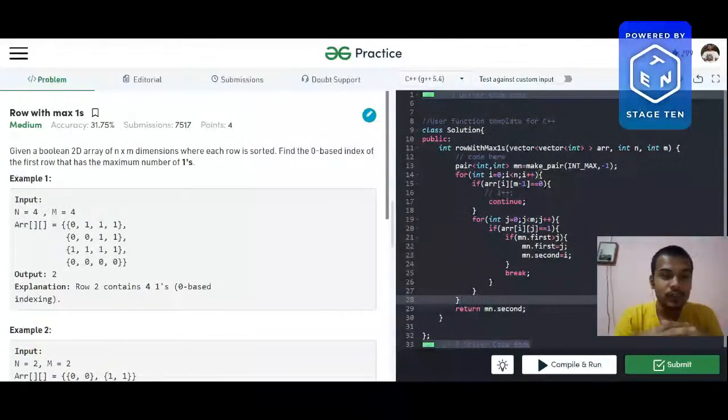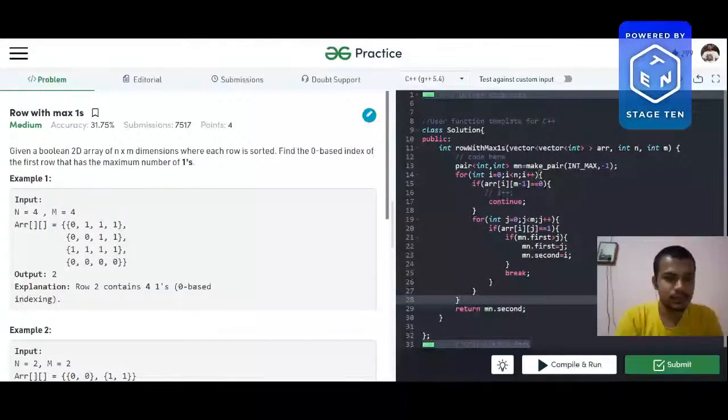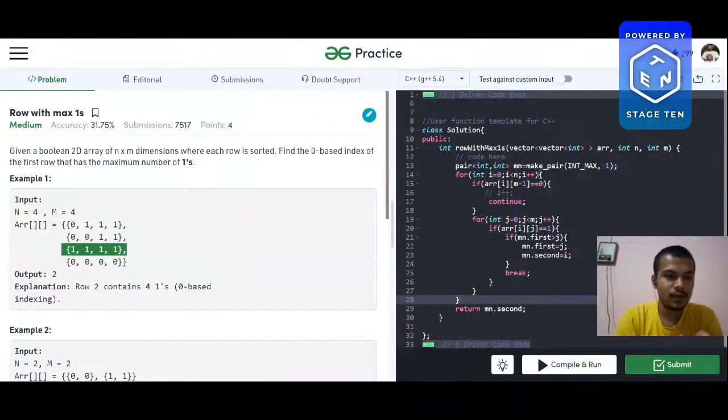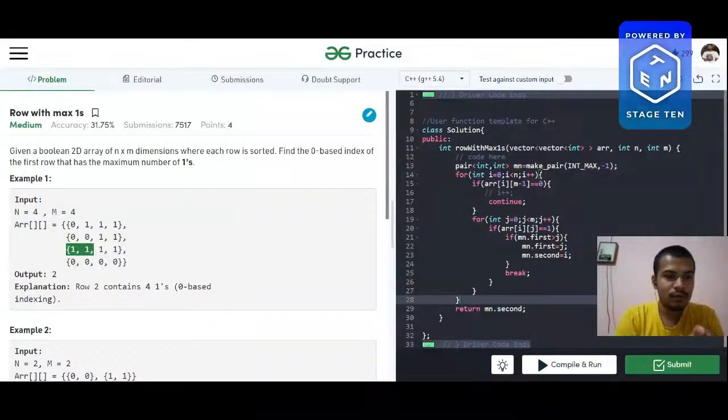the row with maximum ones in a given matrix. So there is this matrix given to us and what we have to do is find the row which has the maximum number of ones in it. So here is a 2D matrix as you can see. We have to return this row as this row has maximum number of ones in it.